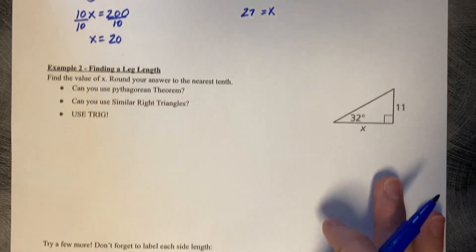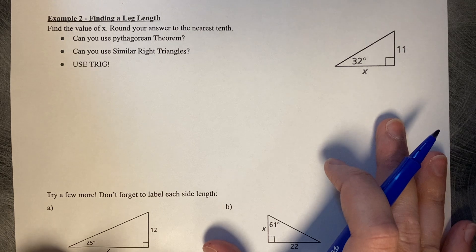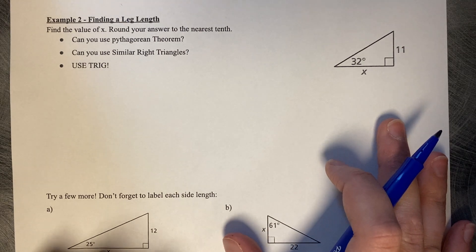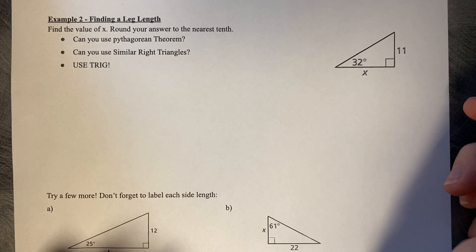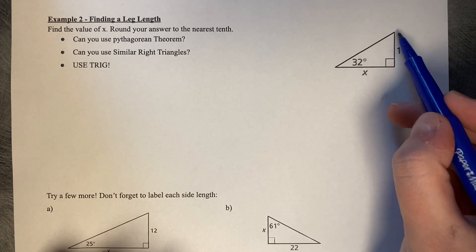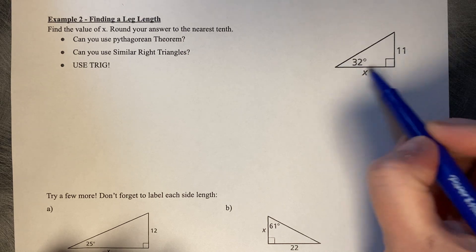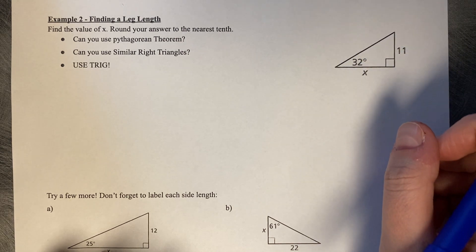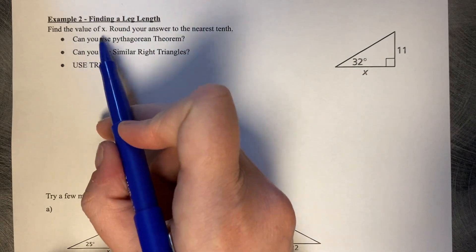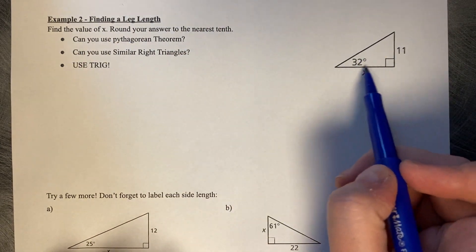Let's try an example where we're going to finally use trigonometry to find a missing leg. Here's our triangle. It's a right triangle with a 32-degree measure. We know one leg is 11, and I have a missing leg, and I have no information about my hypotenuse at all.